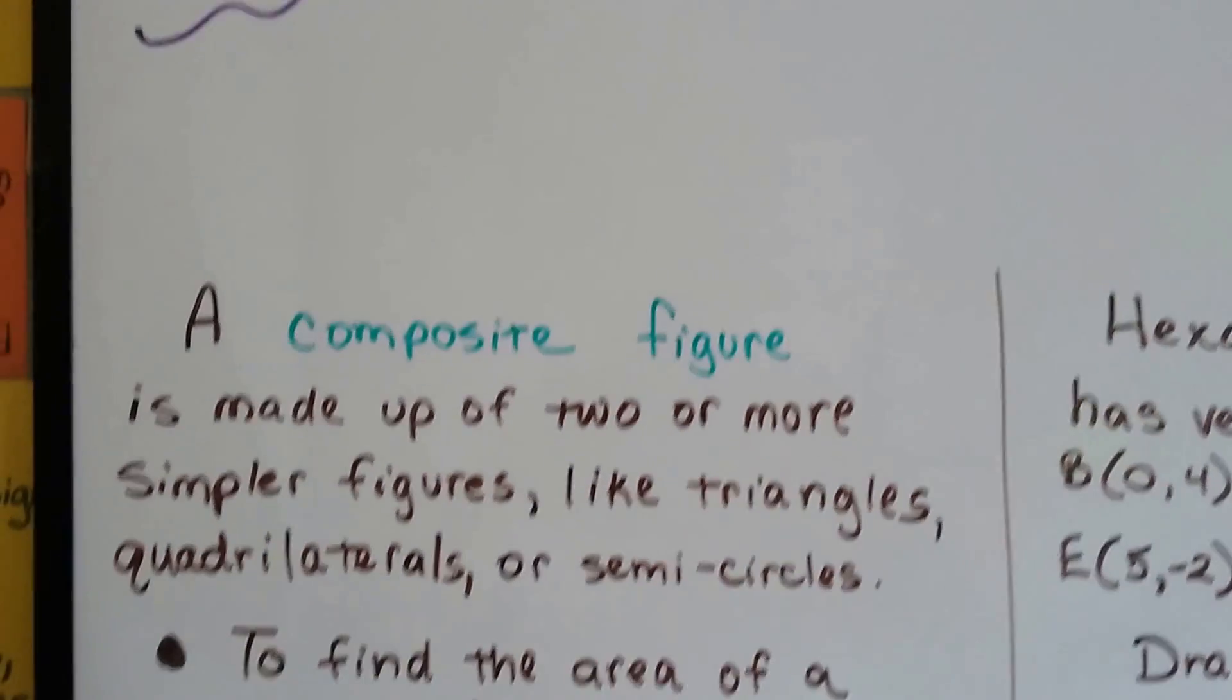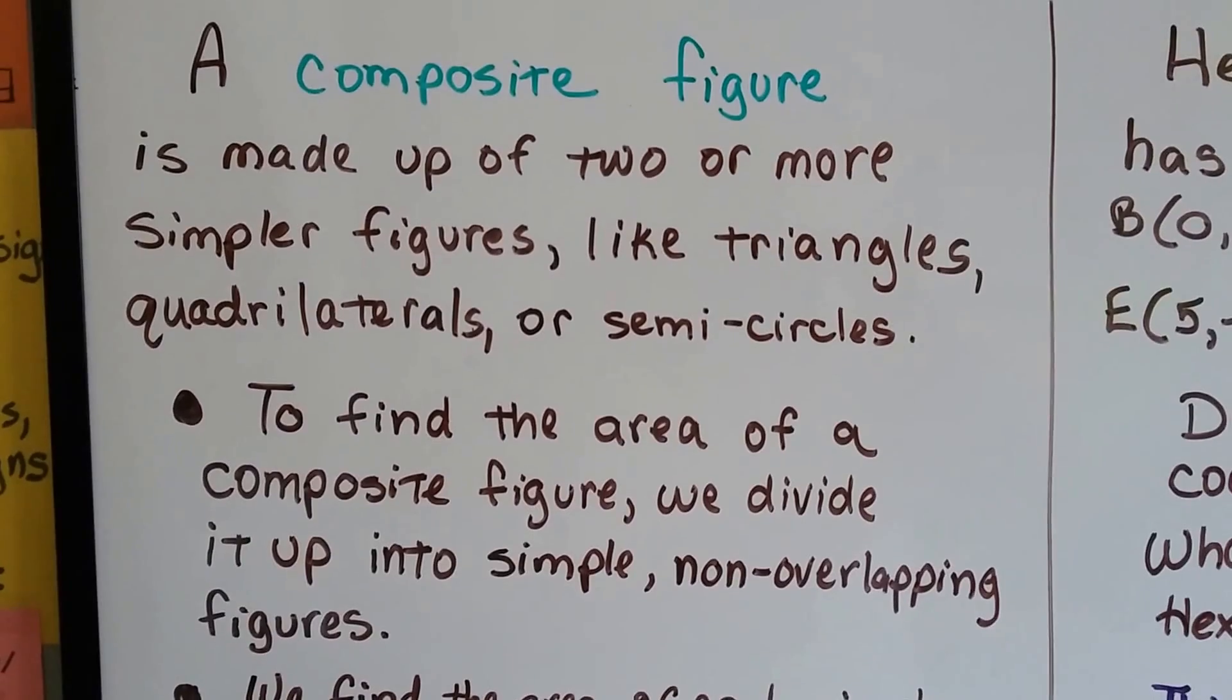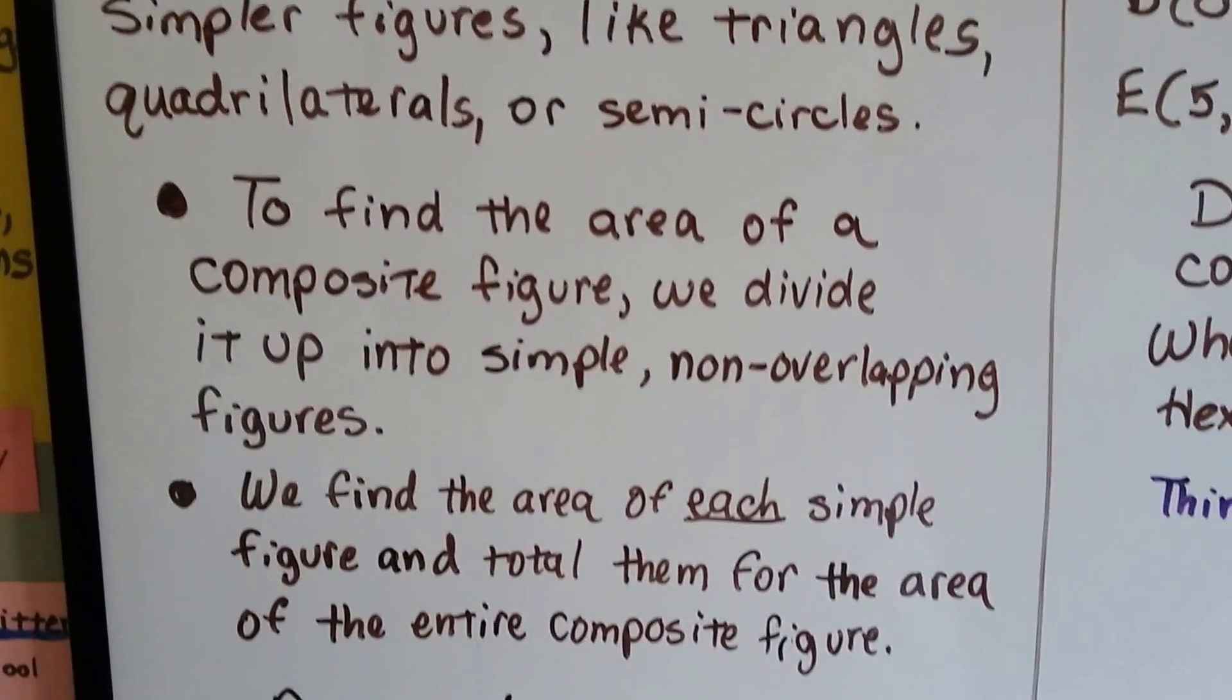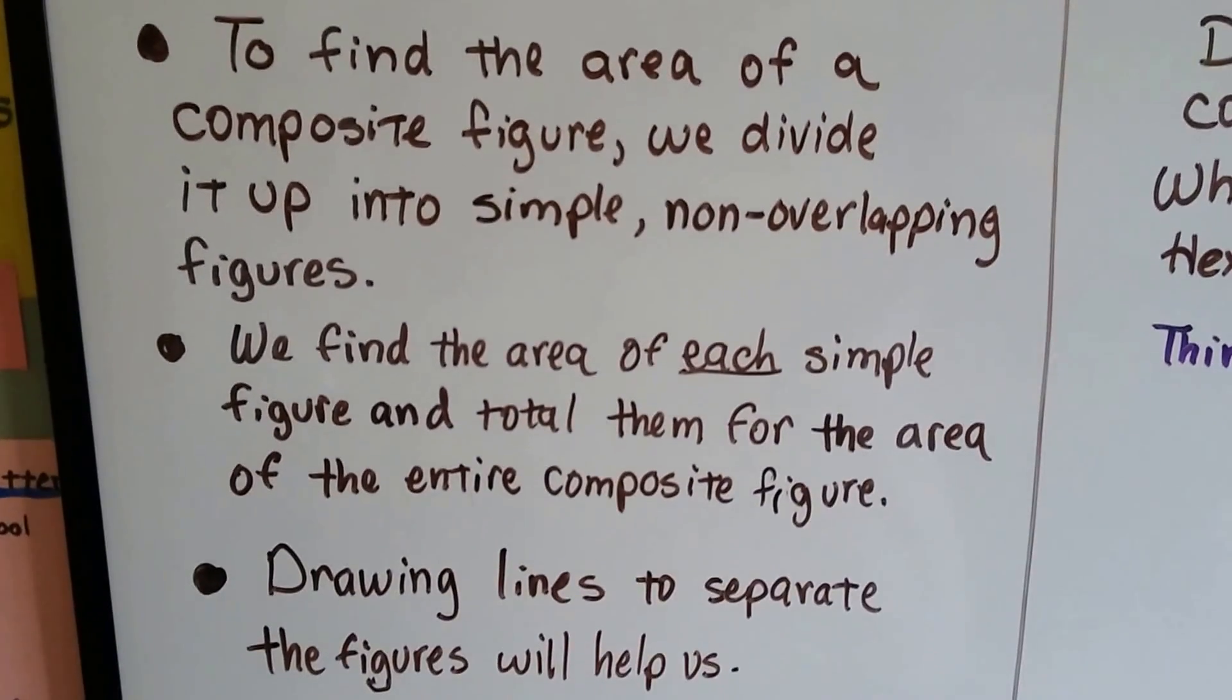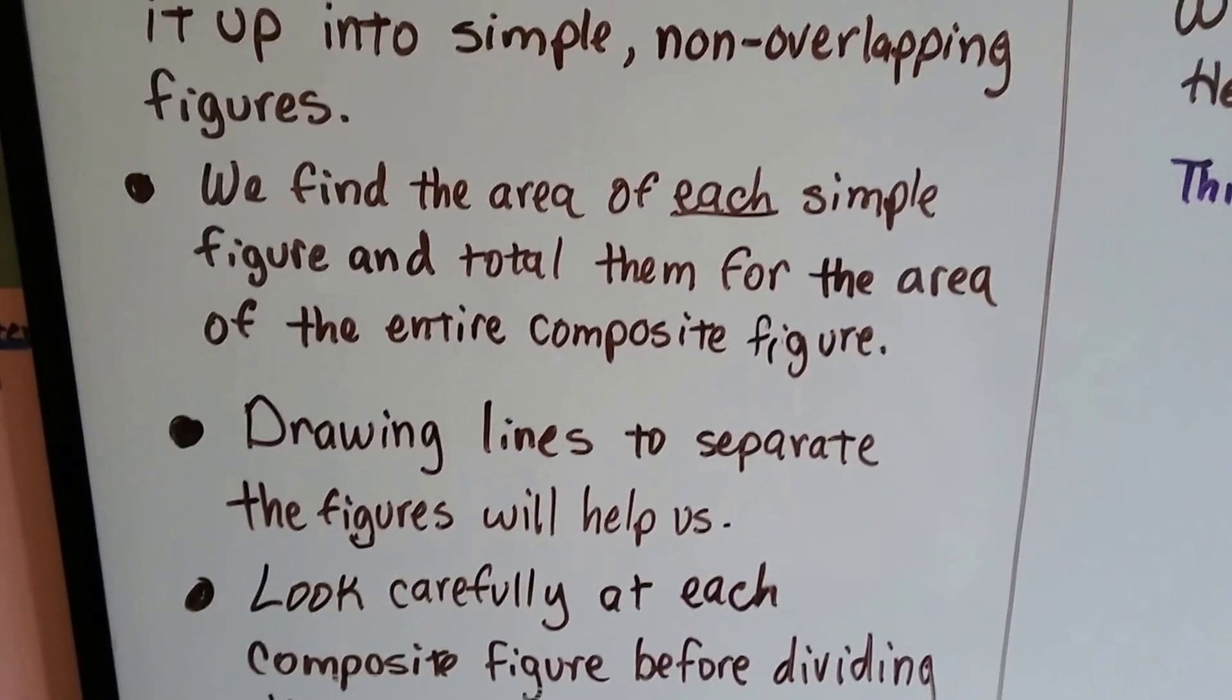We've been talking about composite figures a lot lately. A composite figure is made up of two or more simpler figures like triangles, quadrilaterals, or semicircles. And to find the area of a composite figure, we divide it into simple, non-overlapping figures.